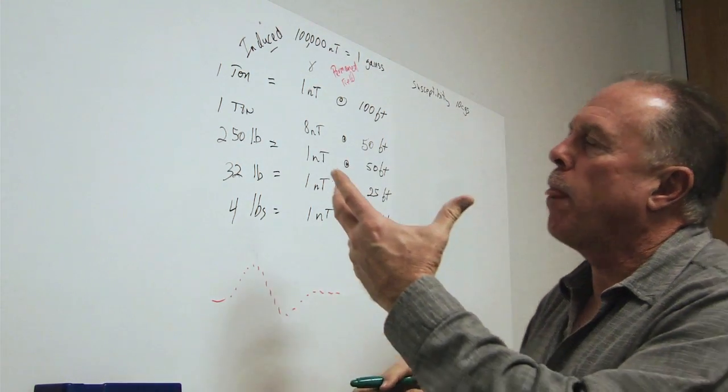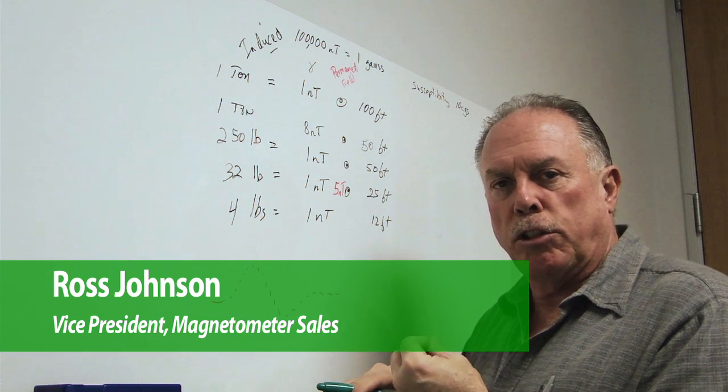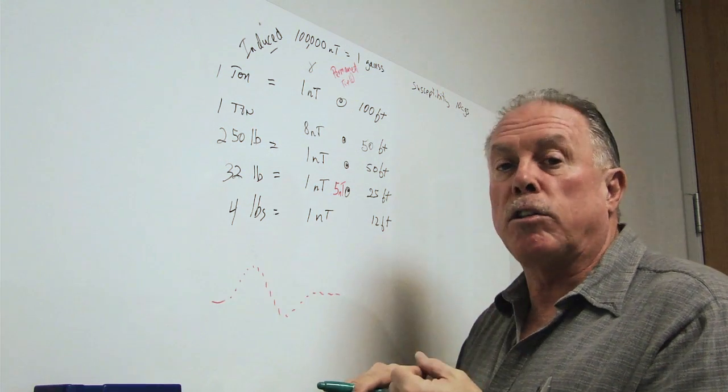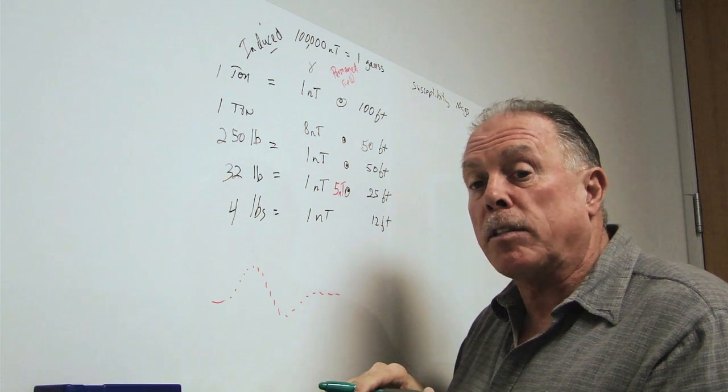Okay, so let's review a little bit about how the objects of our search are distorting the Earth's magnetic field and giving us a response that our magnetometers can detect.